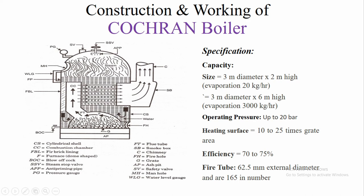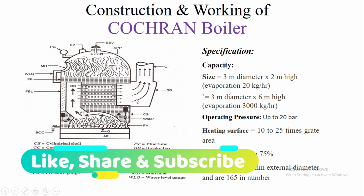After combustion of the fuel, the ash is collected at the ash pit and removed from the furnace. Regarding its discovery, this boiler was discovered by Edward Compton and James Taylor, who established the company named Cochran in Birkenhead around 1878. It is generally used for mobile purposes, such as in a steam roller.